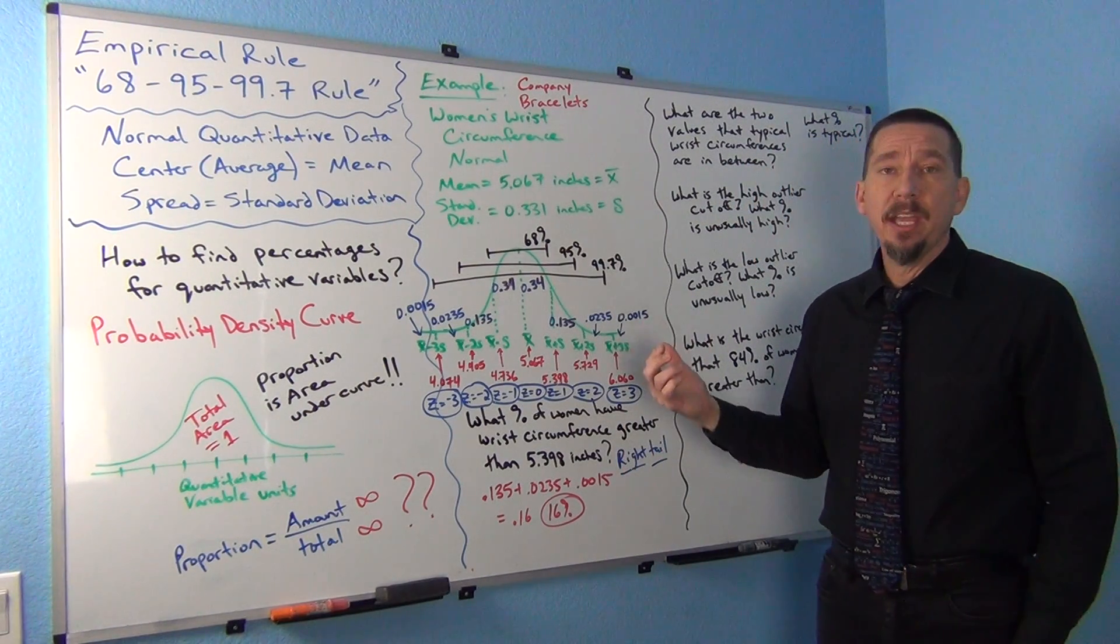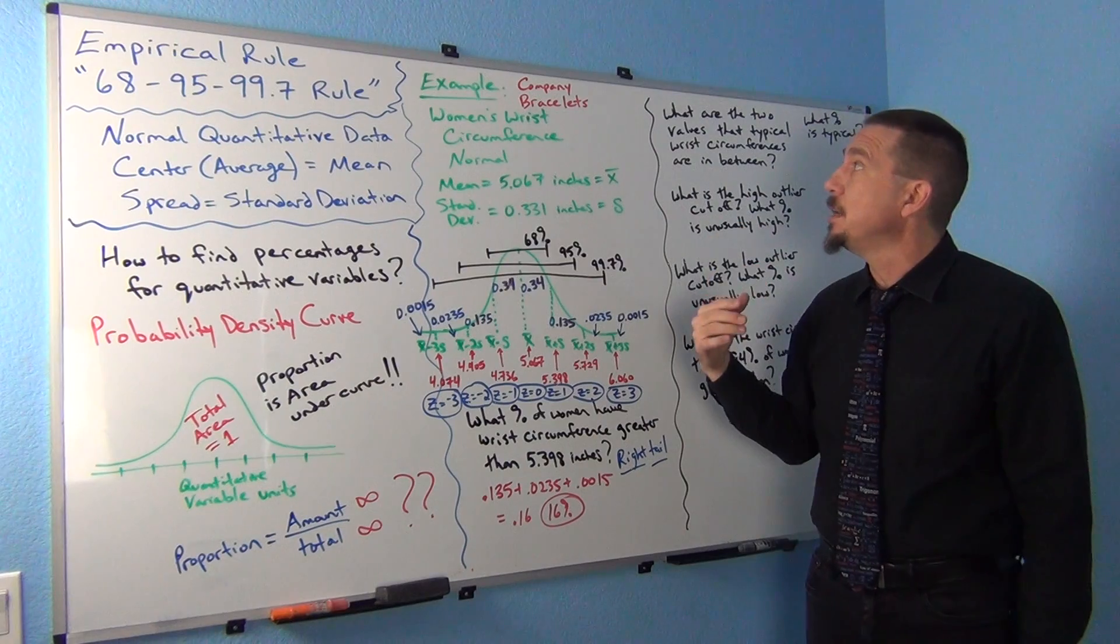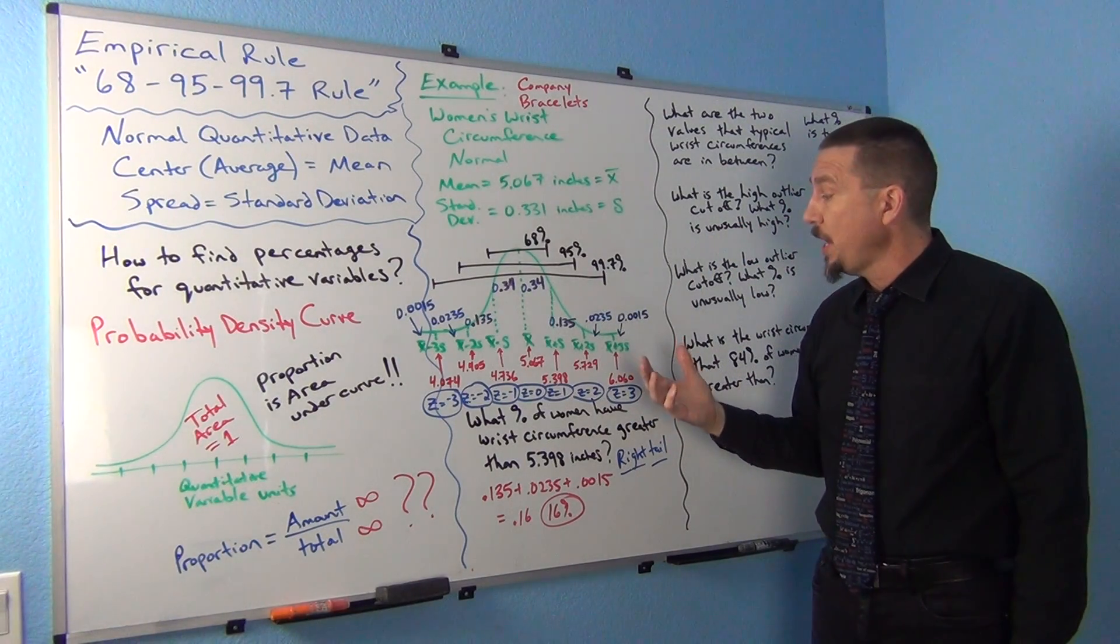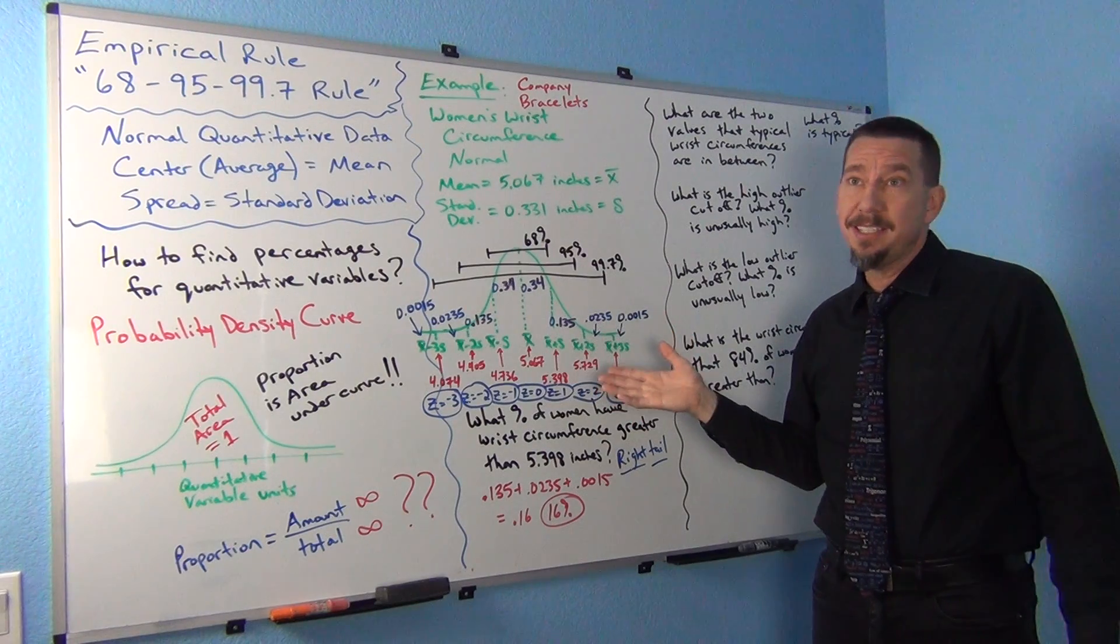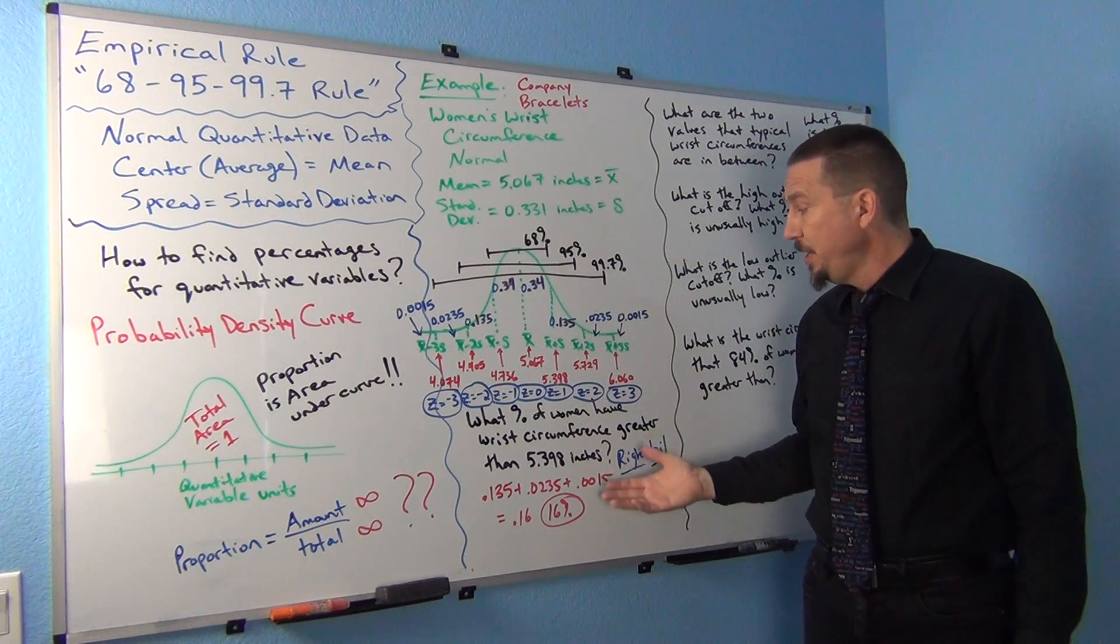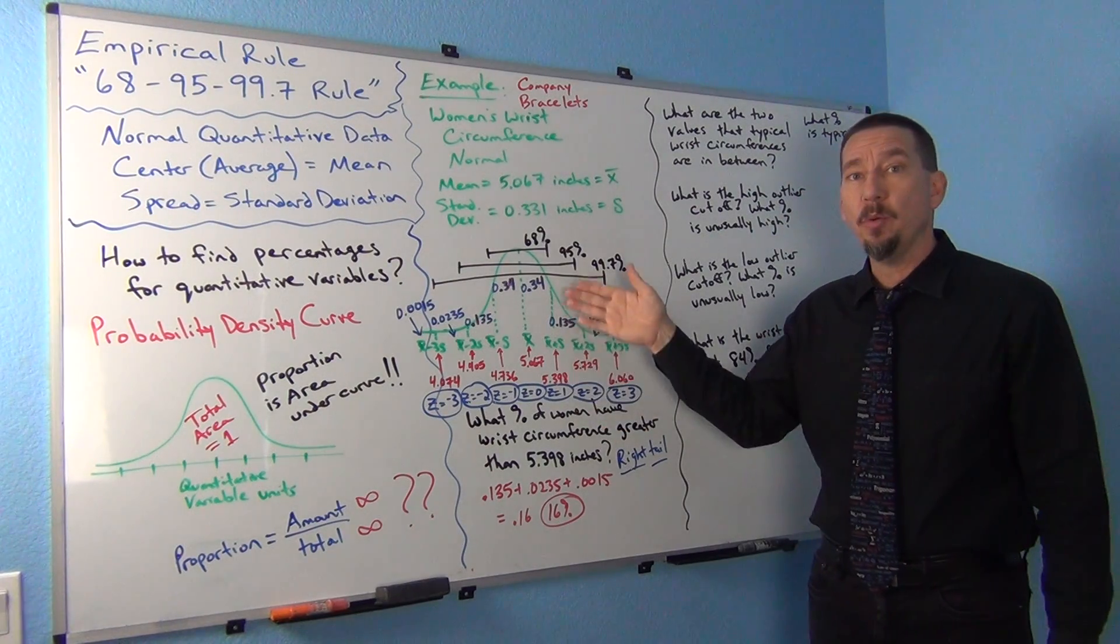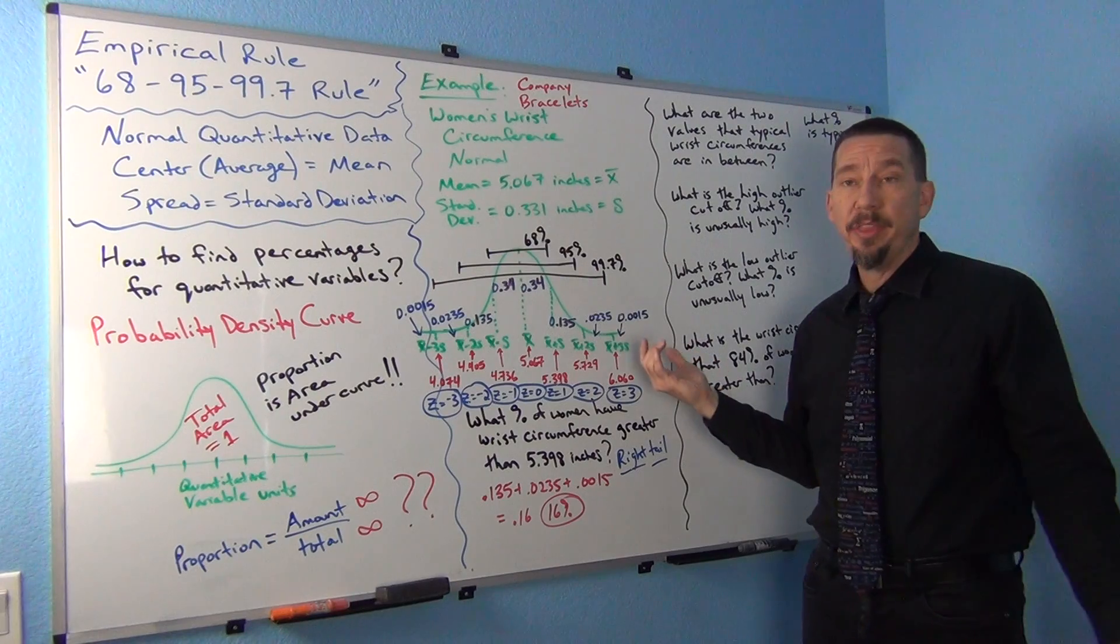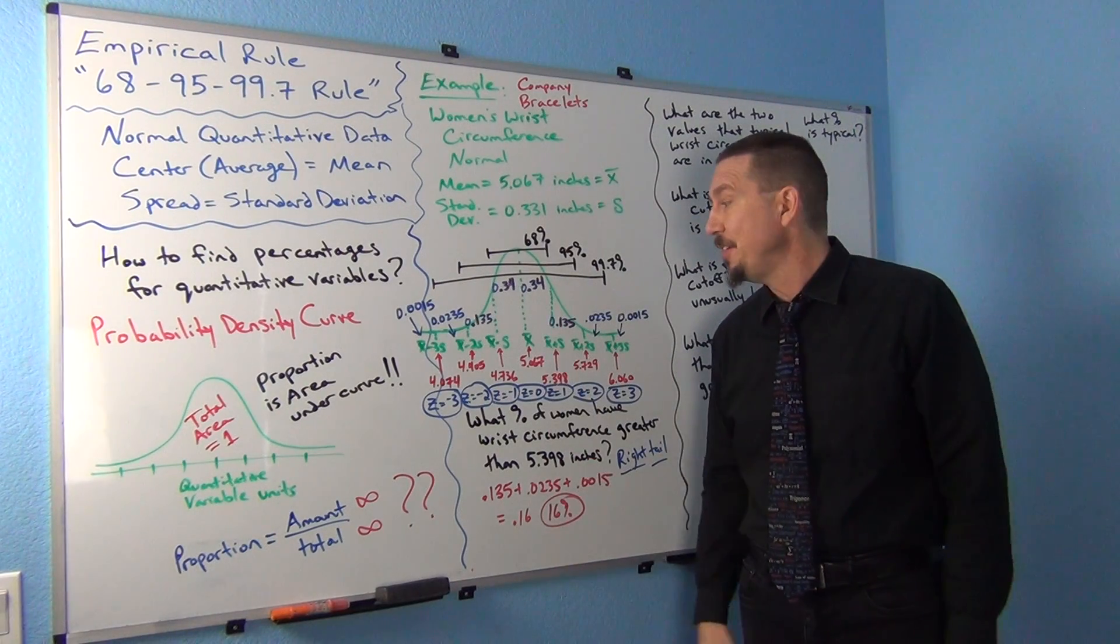You can think of where this would be useful. If you had a company manufacturing bracelets, they'd have to think about, well, only about 16% of our women customers are going to be above this value, so maybe I don't want to make too many bracelets that are greater than 5.398 inches. That's how this works.